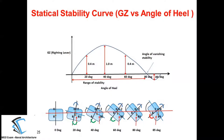The reason GZ starts decreasing is that the maximum underwater volume is now increasing toward the port side, even though the ship is inclined toward starboard. So the centroidal location of the underwater volume starts moving toward the left side.